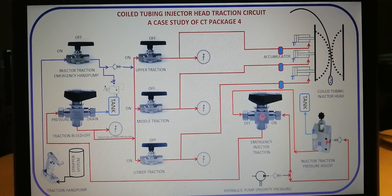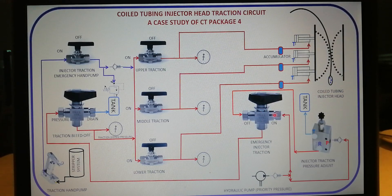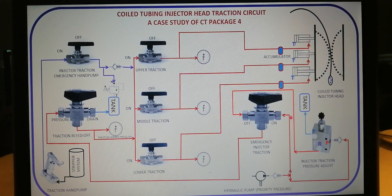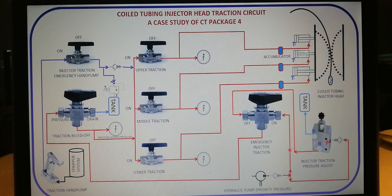Mostly, this valve is used in an emergency situation like runaway tubing. You want this valve to supply the maximum pressure of the priority system to each of the traction cylinders, thereby bypassing the normal injector traction pressure adjust. This valve gets hydraulic supply directly from the priority system.